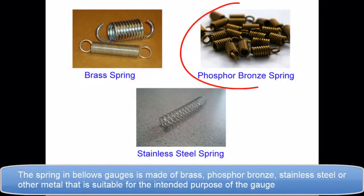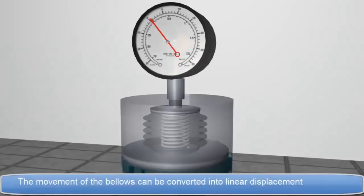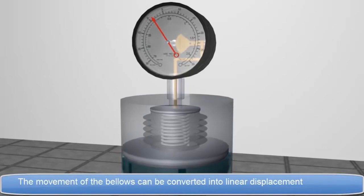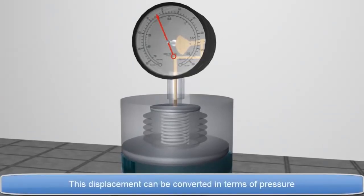The spring in bellow gauges is made of brass, phosphor bronze, stainless steel, or other metal that is suitable for the intended purpose of the gauge. The movement of the bellows can be converted into linear displacement. This displacement can be converted in terms of pressure.